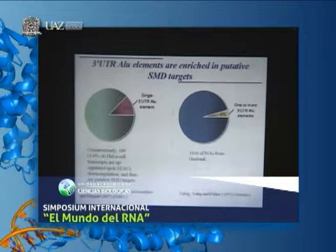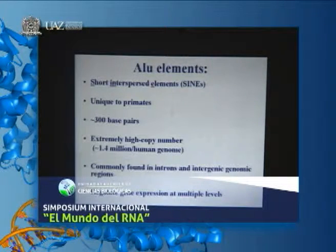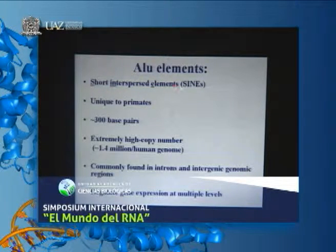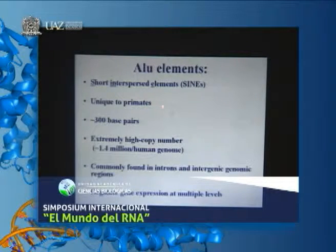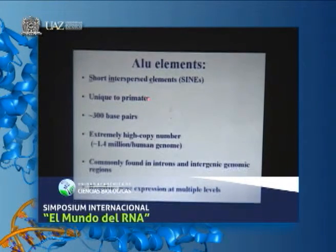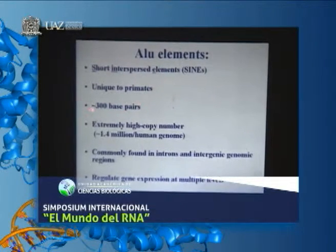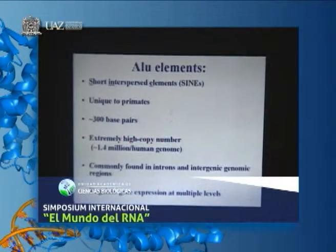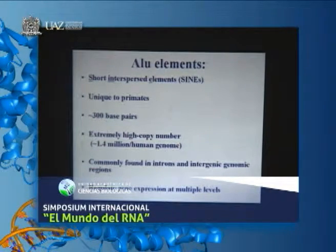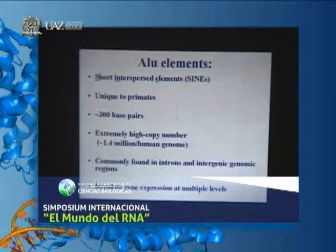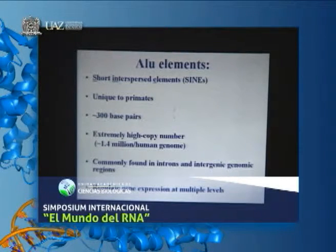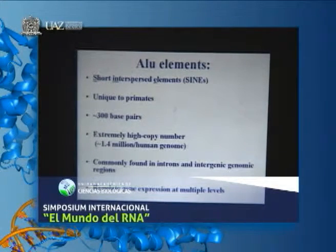ALU elements are short interspersed elements (SINEs), unique to primates—chimpanzees, monkeys, apes. They're about 300 base pairs and are present at extremely high copy number, constituting 10% of the human genome with 1.4 million copies per genome. For a long time they were thought to be junk because no one knew their function. They're commonly found in introns and intergenic regions. Every human pre-mRNA has on average 16 ALU elements. They were known to regulate gene expression at multiple levels—because they're AU-rich, they can create polyadenylation sequences, splice sites, and sites for microRNA binding.